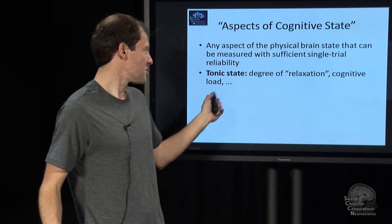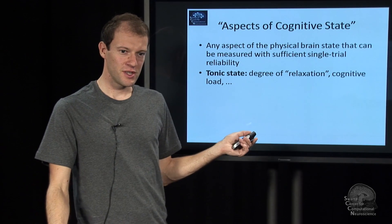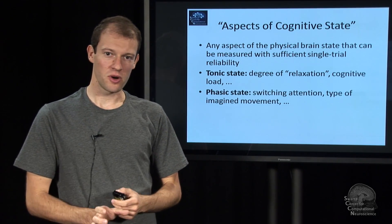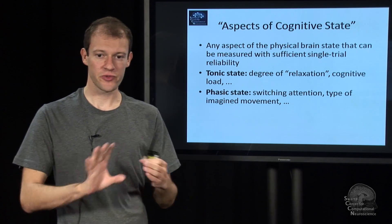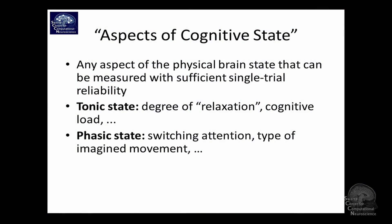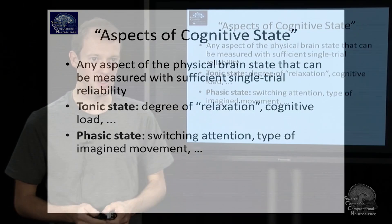And there's only certain classes of brain dynamics that actually support these kinds of things. There's what we call phasic state, which is fast-changing state, that's such as things like your current attention deployment, which might switch rapidly, or the movement that you imagine at a given point, and things like that.